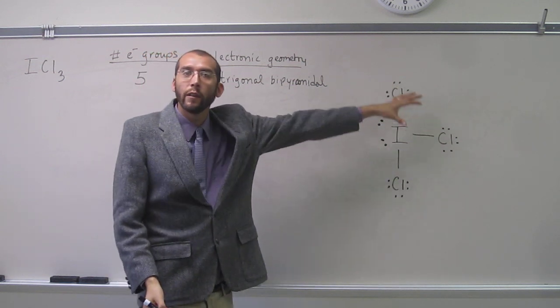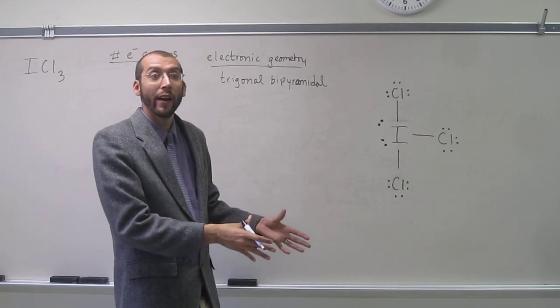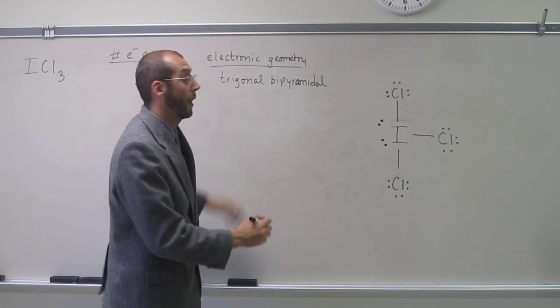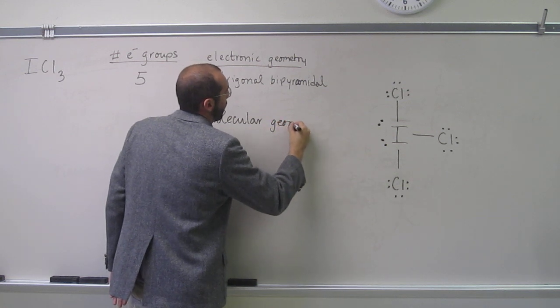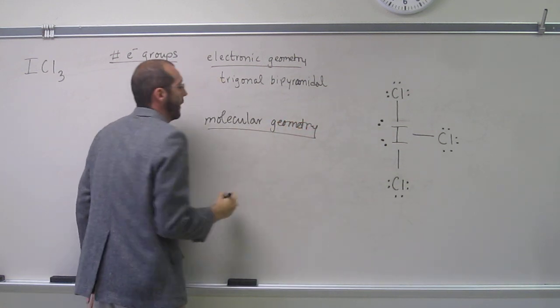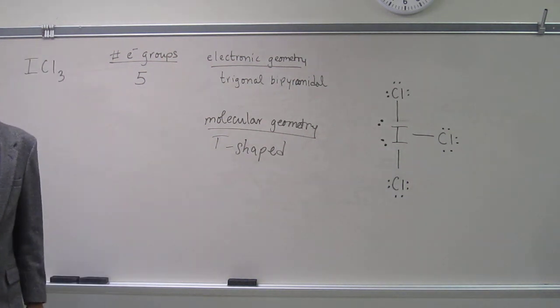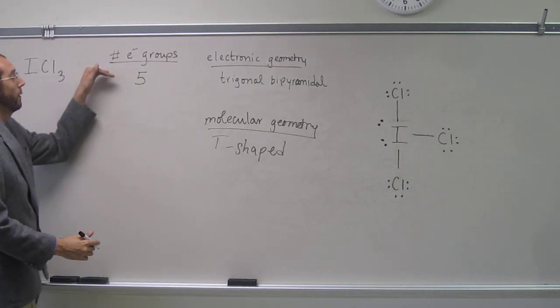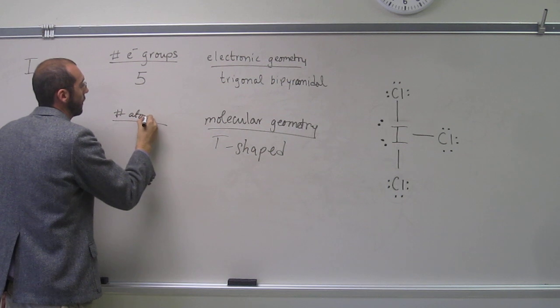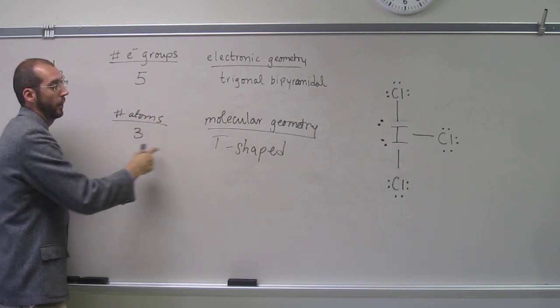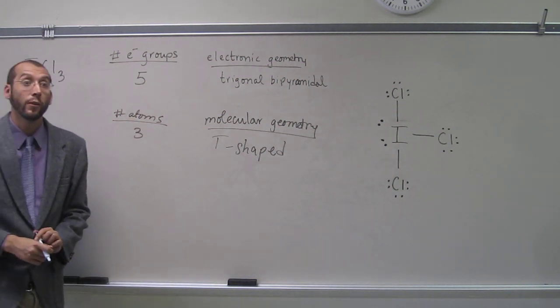But in this case, we only have three atoms around the central atom, right? So there's not five atoms, so it's not trigonal bipyramidal molecular geometry. But instead, it's T-shaped. So again, you've got to go with five electron groups, then it must be trigonal, but since we've got only number of atoms, it's three, it must be T-shaped. Is everybody okay with this analysis?